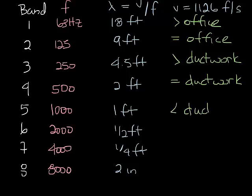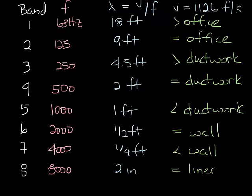The fifth band is a foot, which is smaller than duct work. The sixth band is about 1⁄2 foot. That's about the thickness of a wall. The seventh band is 1⁄4 foot. That's definitely less than the thickness of a wall. And the eighth band is about 2 inches, which is about the thickness of liner inside your duct work.